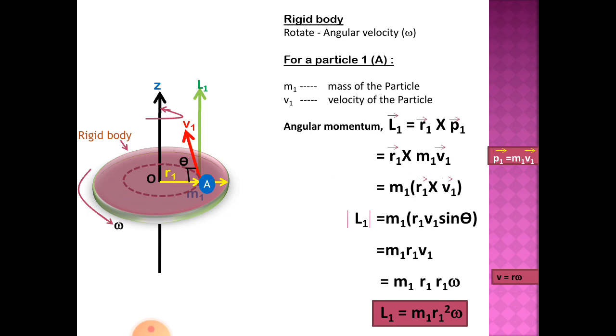Let A be a particle of this body at a distance r1 from the origin O and having linear velocity v1.